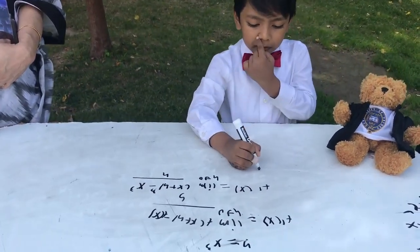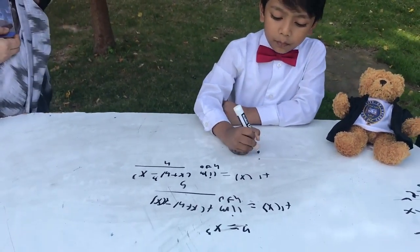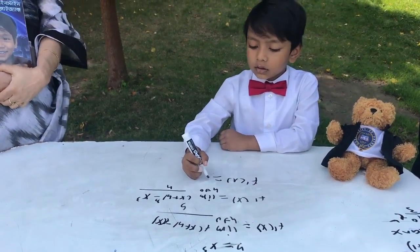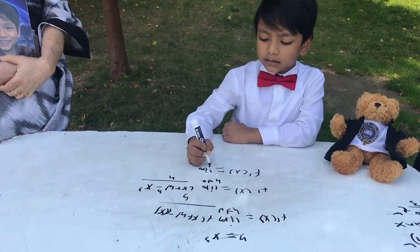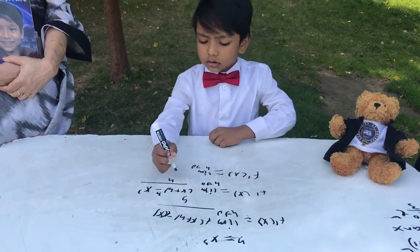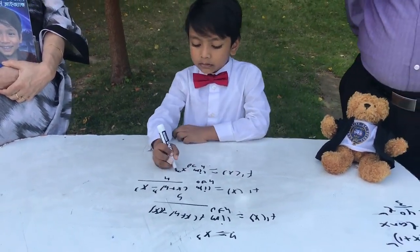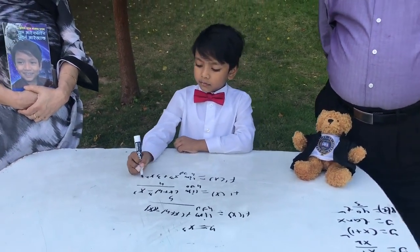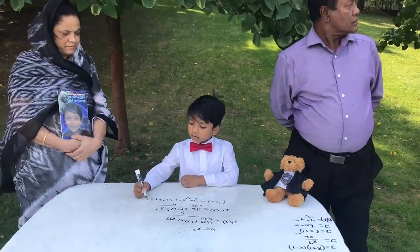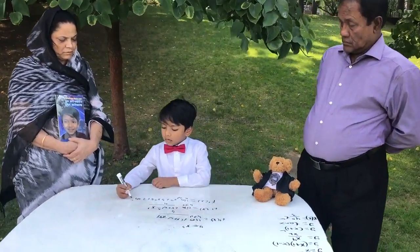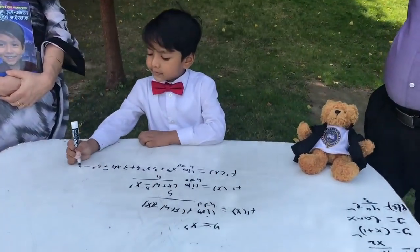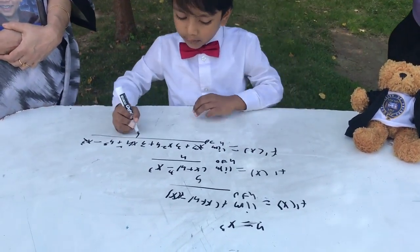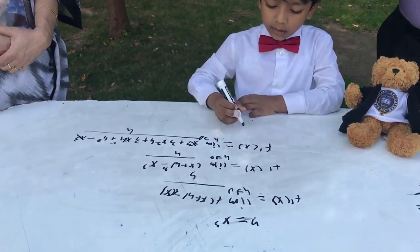So f prime of x equals the limit as h goes to 0. Expanding: x cubed plus 3x squared h plus 3xh squared plus h cubed, minus x cubed. The x cubed terms cancel, over h.